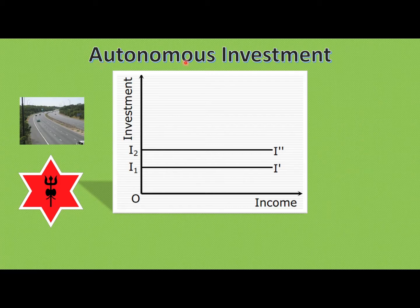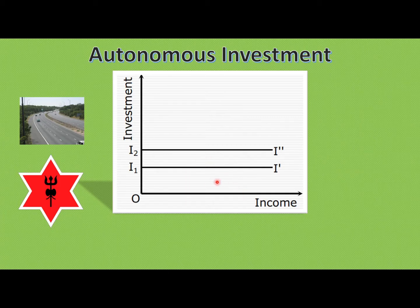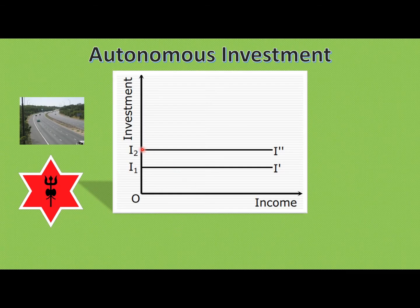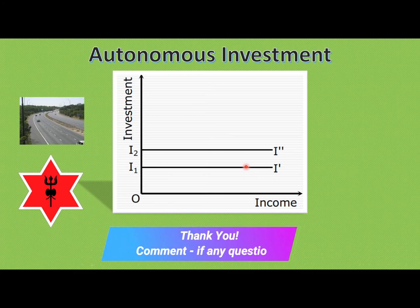So, autonomous investment is that investment which does not depend upon national income, and is most often done by the government. In the private sector, profit-oriented businesses invest based on future growth, while the government is responsible for infrastructure development such as roads and defense. Certain investments are autonomous investments. After this class, in the next video, I will be talking about marginal efficiency of capital or marginal efficiency of investment. Thank you for watching, and if you have any questions, please comment down below.